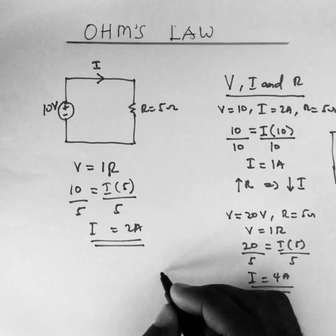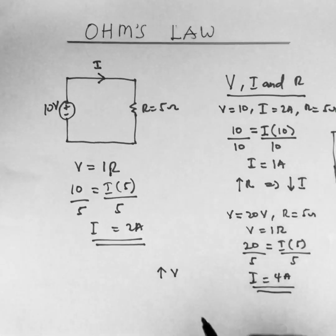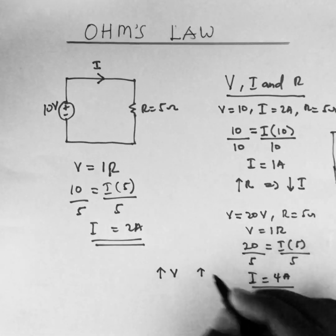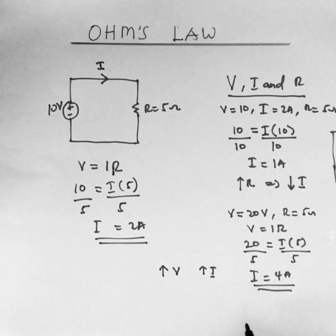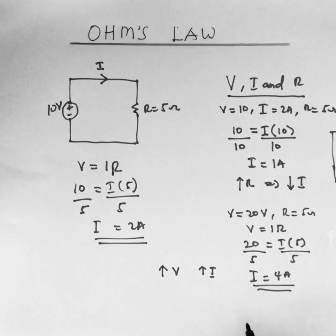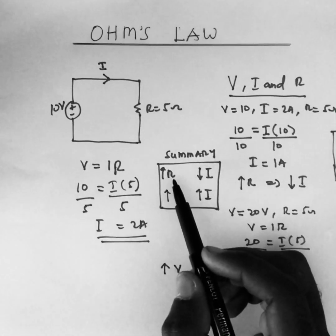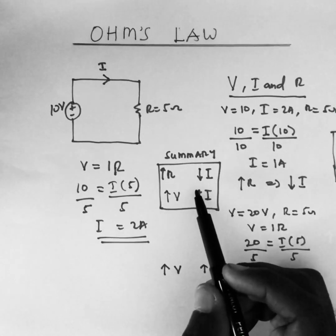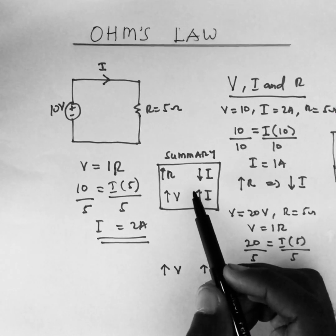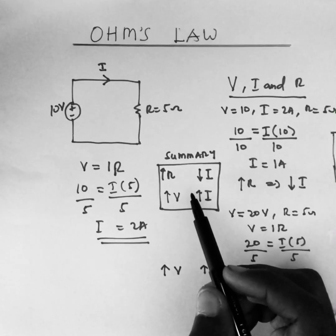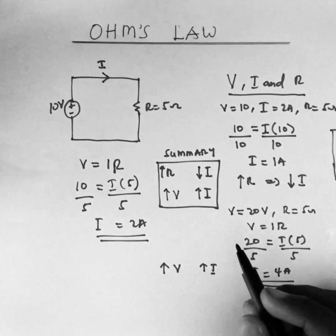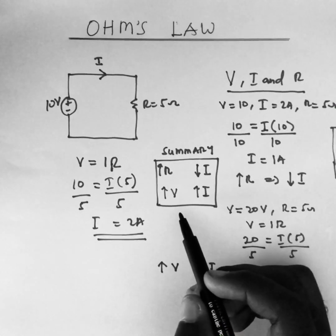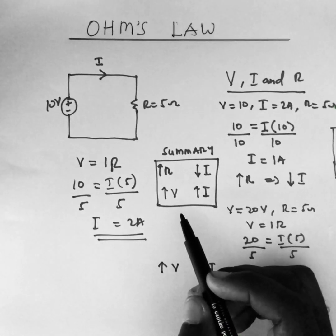We notice that an increase in v results in an increase in i. Thus, if you have a circuit with a very high voltage, it is going to draw a very high current through the load. In summary: an increase in resistance results in a decrease in current, and an increase in voltage results in an increase in current.